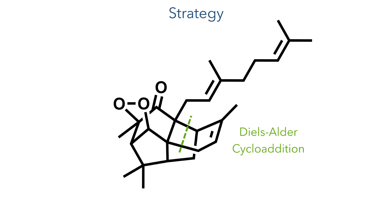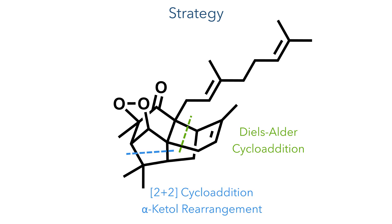To construct this pentacyclic core, they would use a Diels-Alder addition to form one of the ring junctions. The product of this cyclization could then direct another cyclization to occur from the bottom face of the molecule, ensuring that the desired stereochemistry is formed. This cyclization would be part of a cascade leading to an alpha-ketol rearrangement, setting the stage for a triplet oxygen oxidative cyclisation to form the endoperoxide on the top face of the molecule.